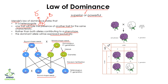A recessive trait cannot be seen unless you have small r and small r together. For example, here we have one purple flower and one white flower. The white flower is a recessive trait shown with small r, while the purple one is dominant shown with capital R. In the first generation, because purple color was dominant, we have all purple colors and no white color.